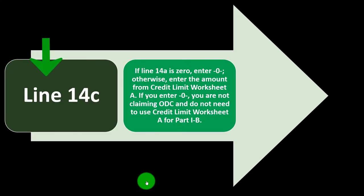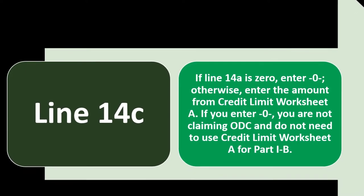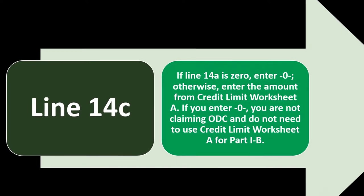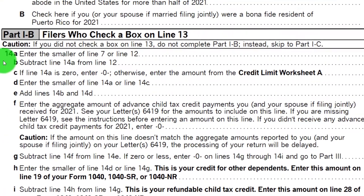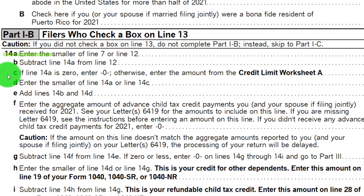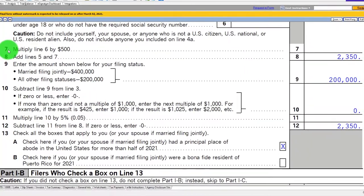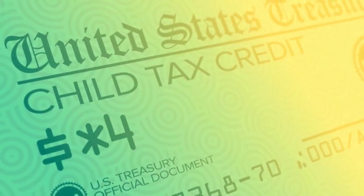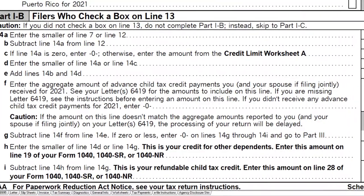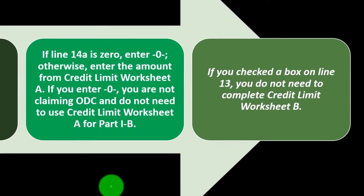Line 14C: if line 14A is zero, enter zero. Otherwise, enter the amount from Credit Limit Worksheet A. If you enter zero, you are not claiming the ODC and do not need to use Credit Limit Worksheet A for Part 1B. On the worksheet, line 14C says if line 14A is zero, enter the smaller of line 7 or line 12, which relates to other dependents. In this example we're focused on the child tax credit, so we don't have an other dependent amount. If you checked a box on line 13, you do not need to complete Credit Limit Worksheet B.